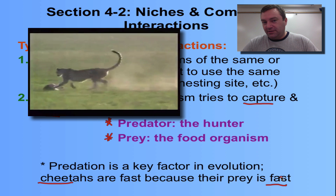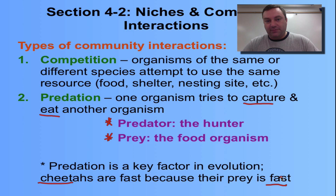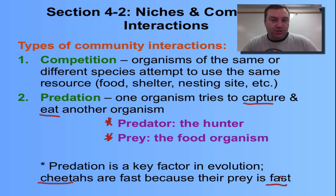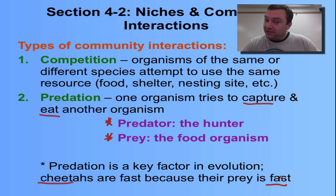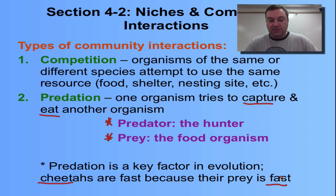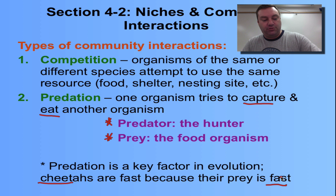Cheetahs and Thompson's gazelles are perfect examples of co-evolution. The gazelles have evolved to be athletic and fast, giving them an opportunity to escape cheetahs. In turn, cheetahs have evolved to be very fast and able to handle the athleticism of Thompson's gazelles in order to capture and eat them. So predation is a key factor when it comes to evolution.